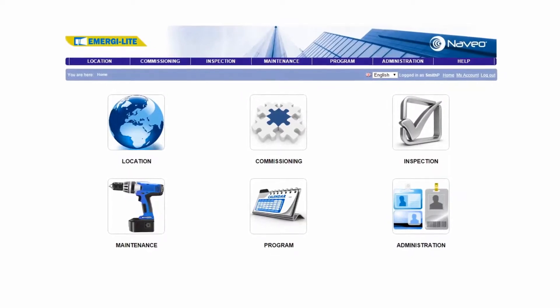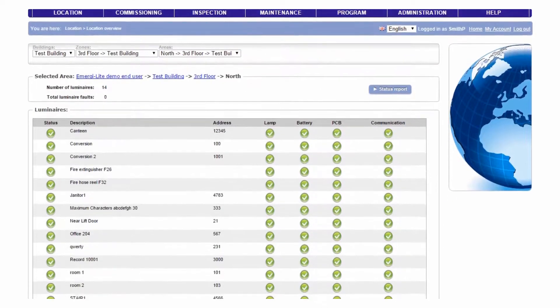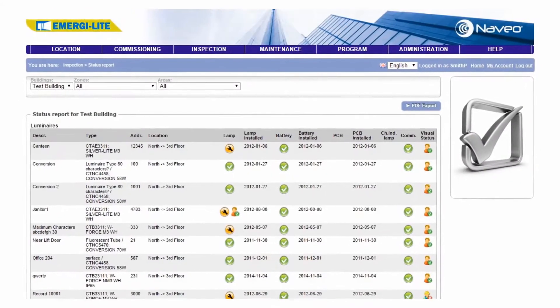For a self-contained system, the Neveo provides local control on site, as well as secure remote access to maintain and manage emergency lighting for multiple sites through a simple web interface. This means before going to a site, we can check the status and find out what all the faults are.